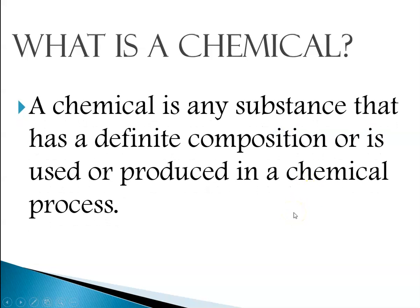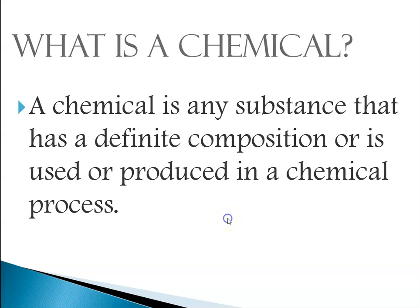So what is a chemical? In chemistry class, a chemical means any substance that has a definite composition, or is used or produced in a chemical process. We'll talk more about chemical processes as we move forward through the year.